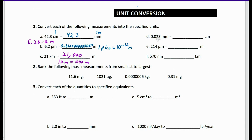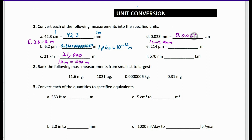Next, we have 0.023 millimeters equivalent to how many centimeters. We already know that 1 centimeter is equivalent to 10 millimeters, so we're going to take this number and divide it by 10. We end up with 0.0023 centimeters.